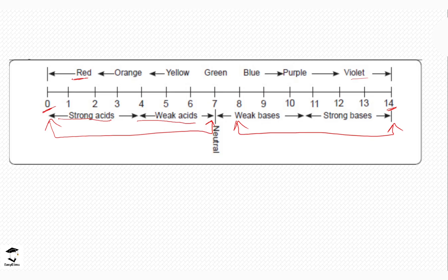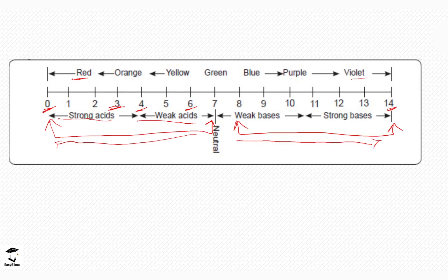A pH of 4 to 6 indicates weak acids. The strength of acids increases as the pH decreases from 6 toward 0. A strong acid has a pH between 0 and 3; a weak acid has a pH of 4 to 6. For bases, the opposite is true — strength increases as you move right. Weak bases are pH 8 to 10, and strong bases are pH 11 to 14.